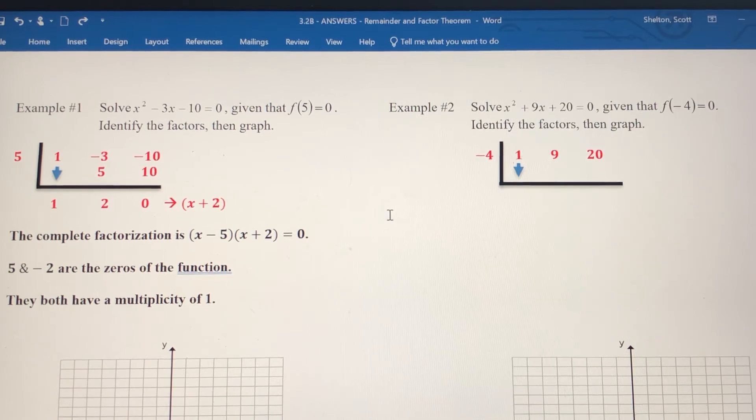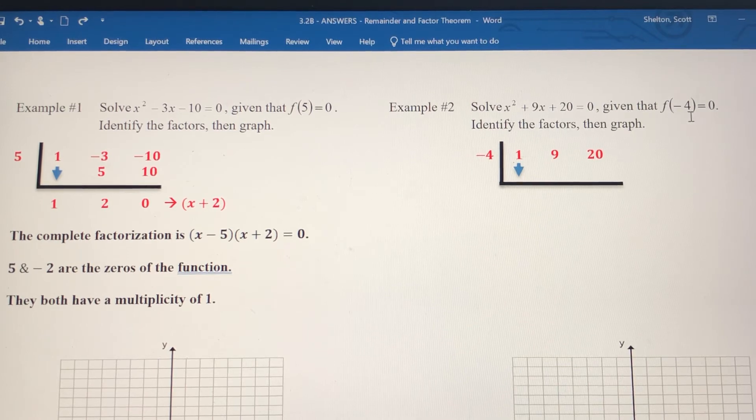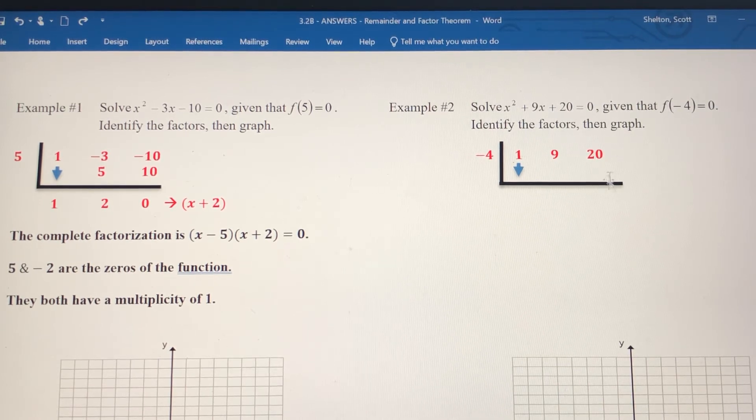Now let's move to example 2. Again, this is a pretty simple quadratic that you could factor without much work, but we still want to use this to help us learn the process. In this one, we're given that f of negative 4 equals 0. So when we go through the process, we should get a 0 here as our remainder. We're going to use this to find the second factor.